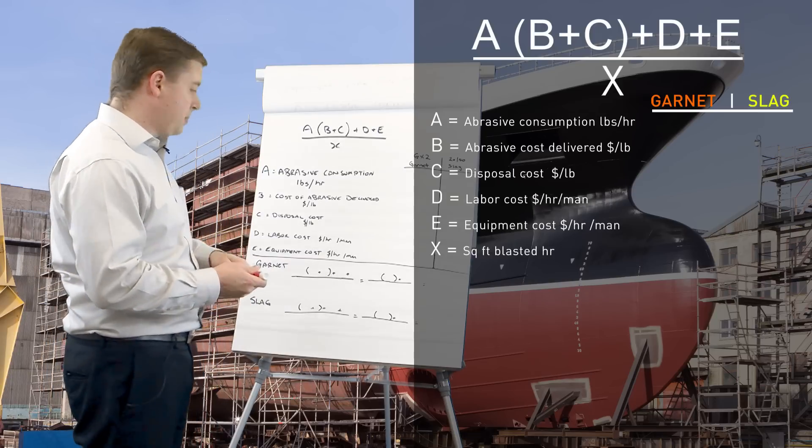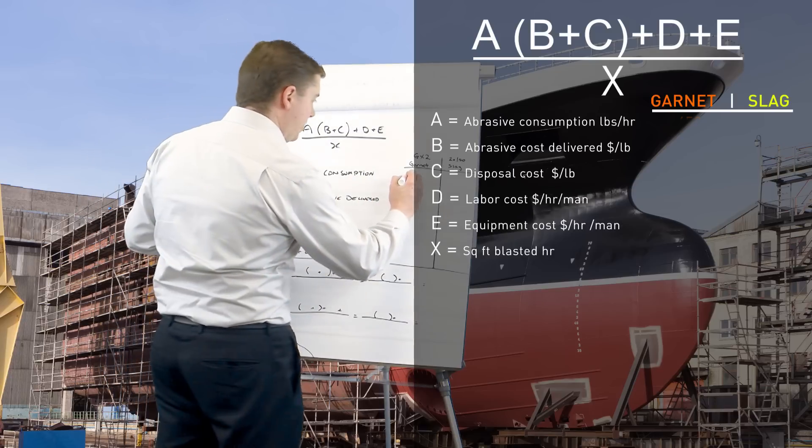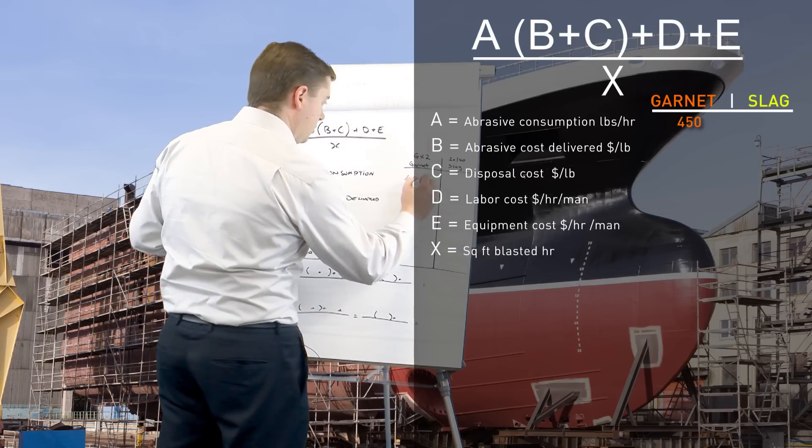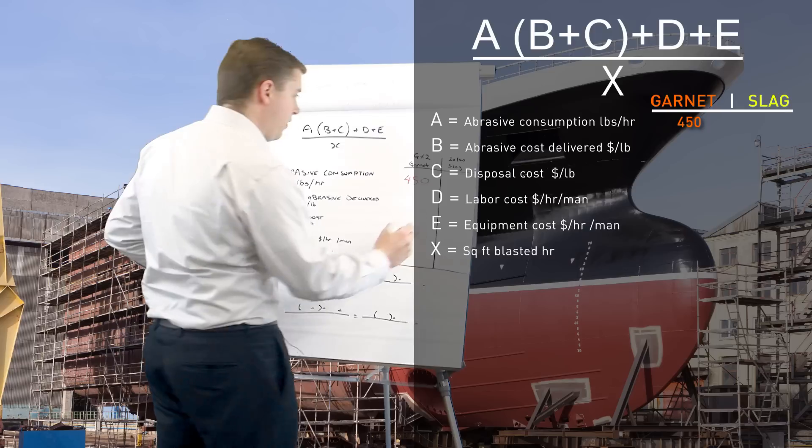So our abrasive consumption per hour with the garnet was 450 pounds an hour. With slag we were getting 1200 pounds an hour.